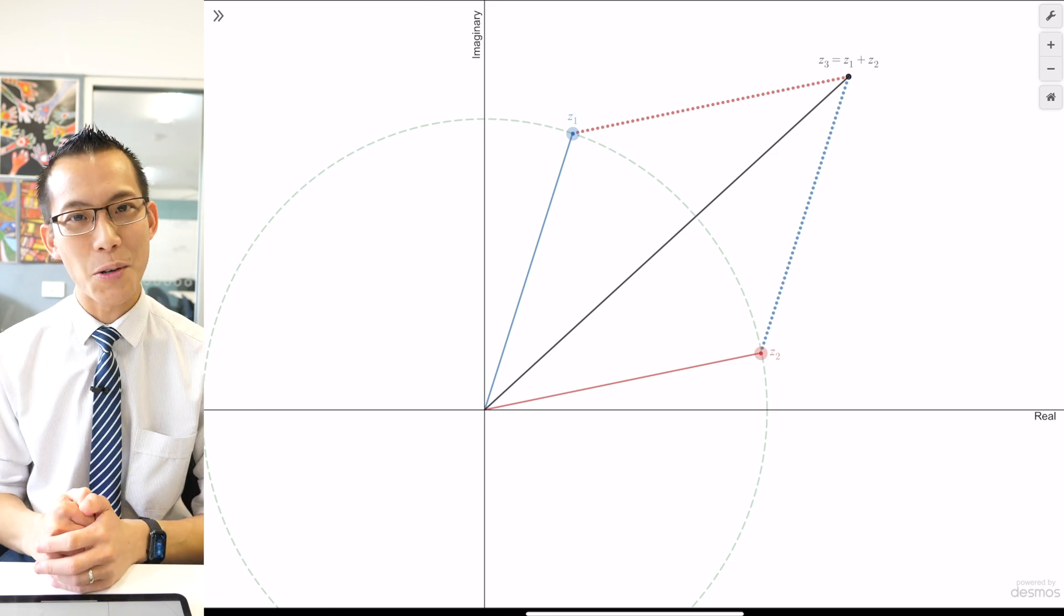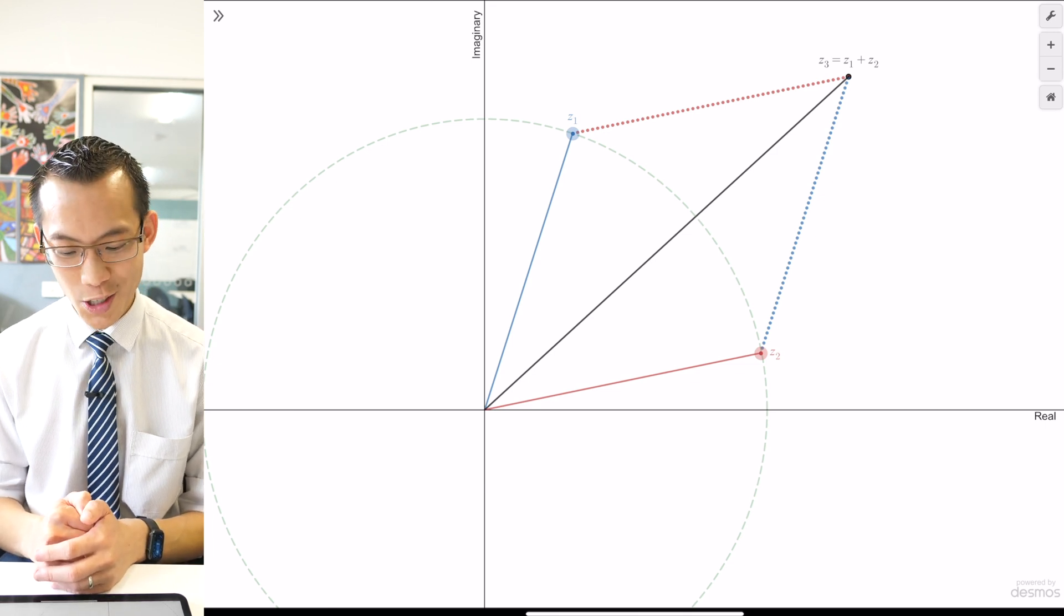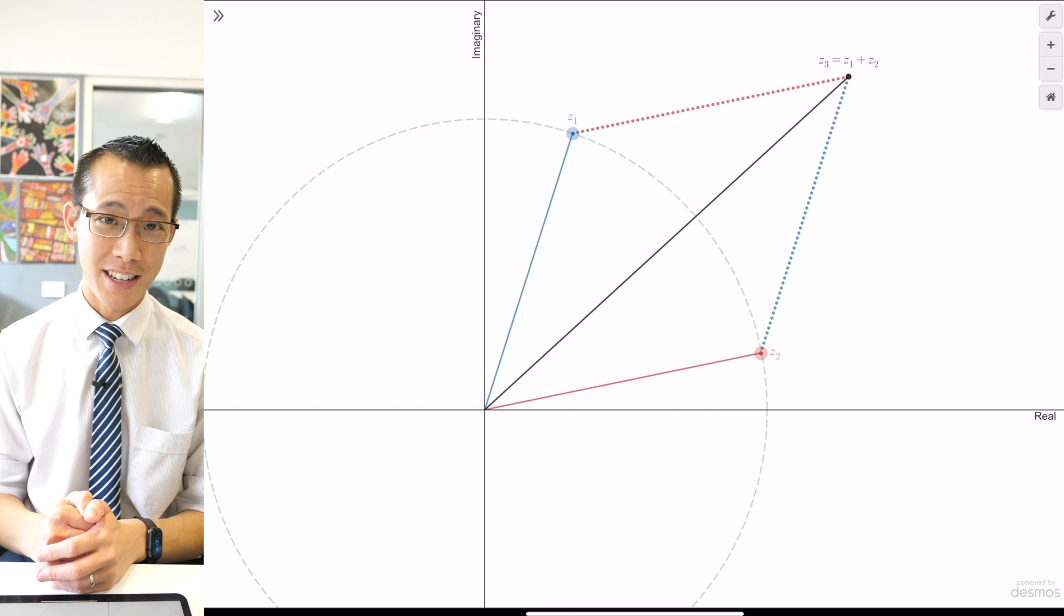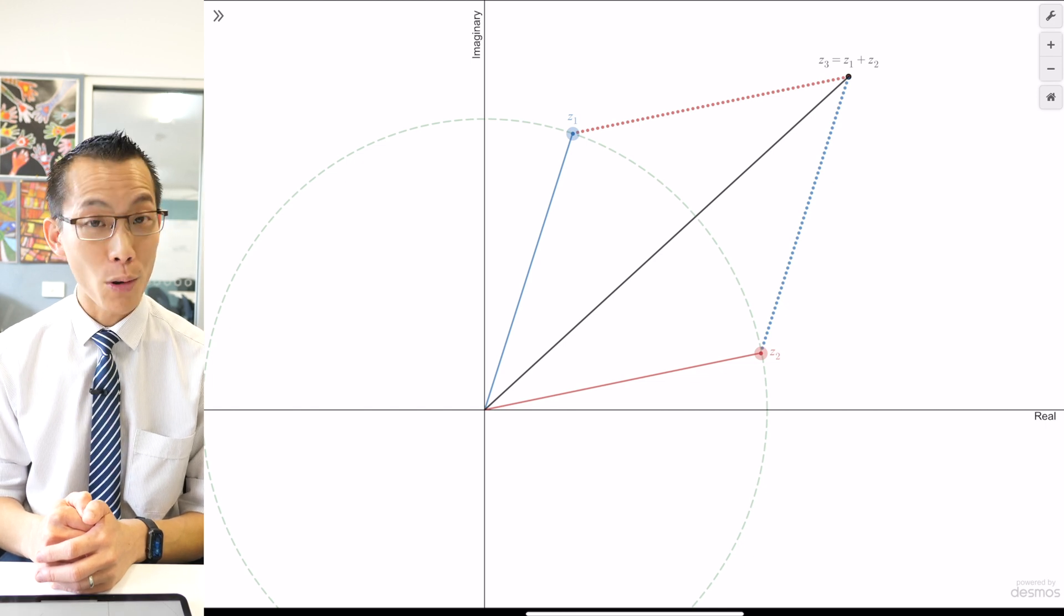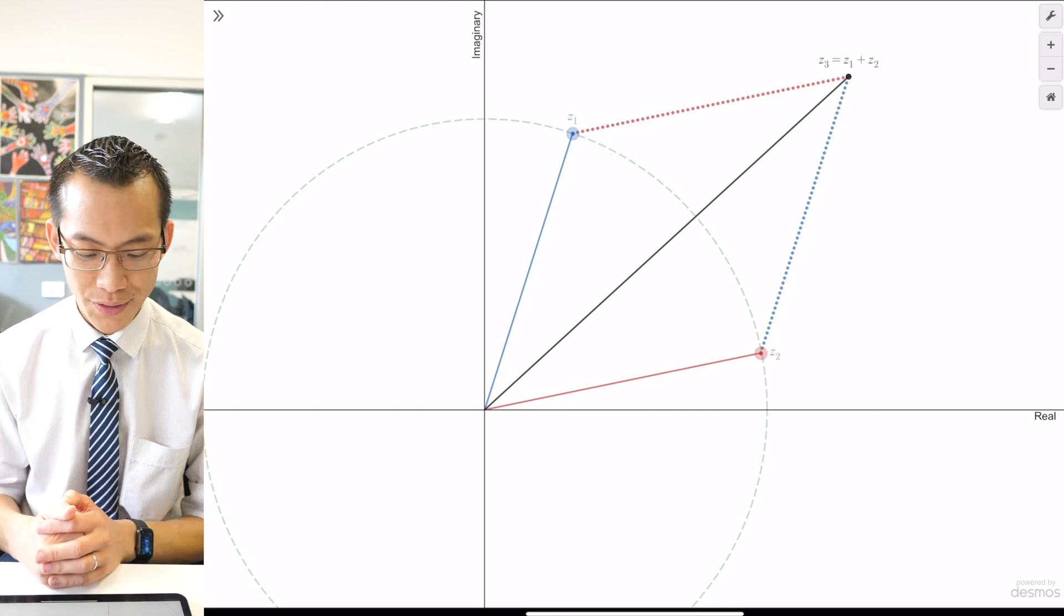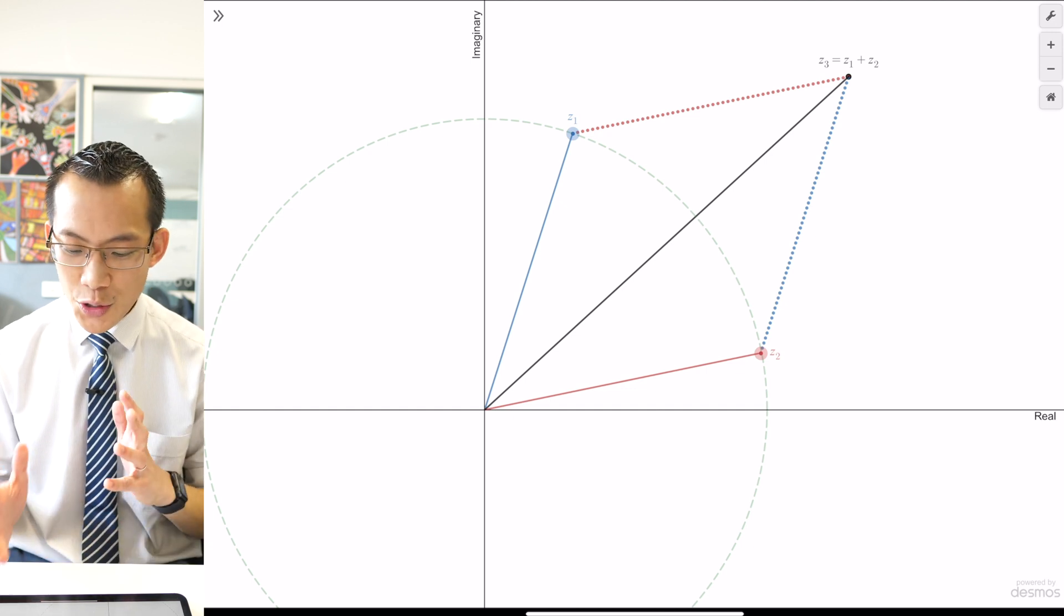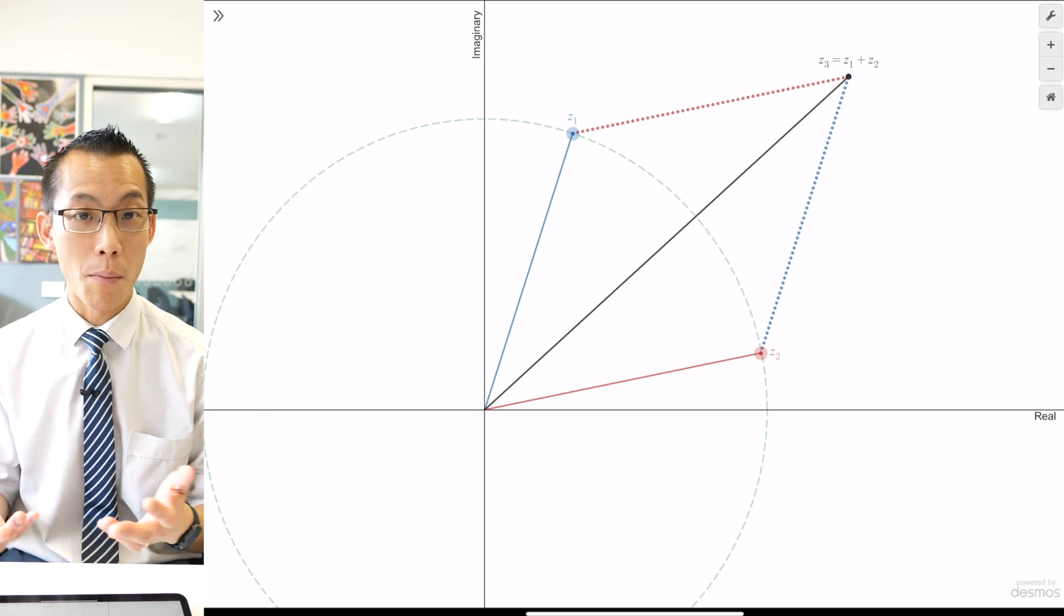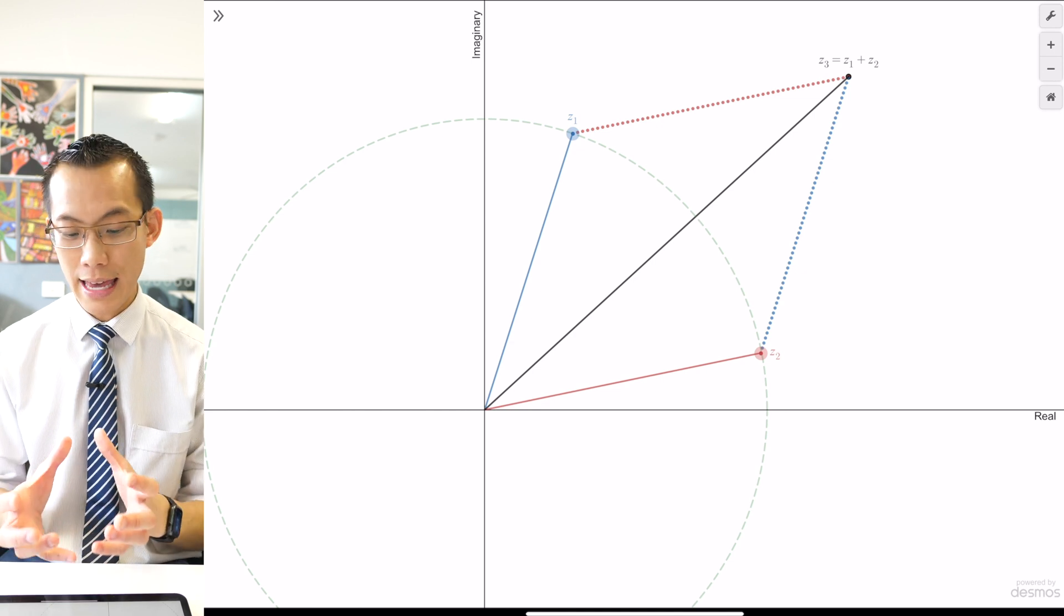You can also see this green dotted circle which is how I'm ensuring that Z1 and Z2 have the same modulus because they're the same distance from the origin. So that's why you've got a consistent radius. You can see here that you're going to get this rhombus situation happening and that's the key.